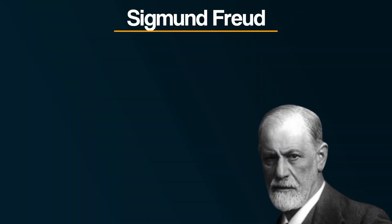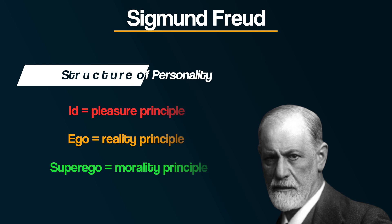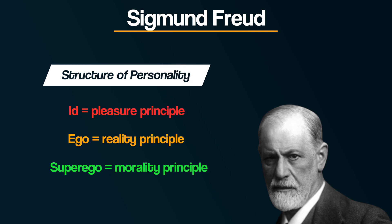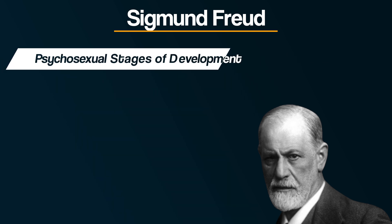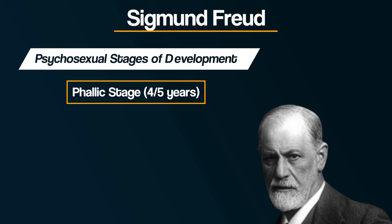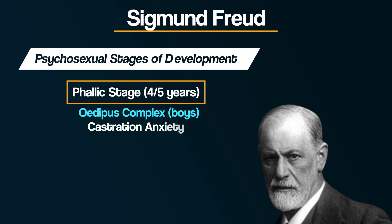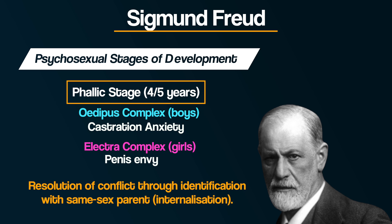There are a few ideas of Freud's to keep in mind whilst we consider gender bias. Firstly, there is the structure of personality made up of the id, ego and superego. The superego, otherwise known as the morality principle, is our focus here. Secondly, we need to keep in mind the psychosexual stages of development. Everyone goes through the phallic stage around the ages of four to five. During this stage, the boy needs to resolve the Oedipus complex, where he has castration anxiety, and the girl the Electra complex, where she has penis envy. In order to resolve these conflicts, they need to identify with their same-sex parent and then internalise their parents' characteristics. It's during the phallic stage that the superego develops.